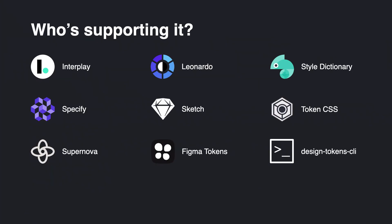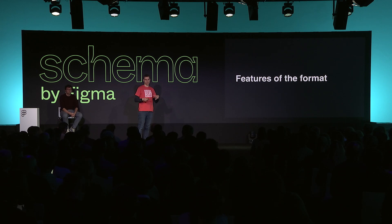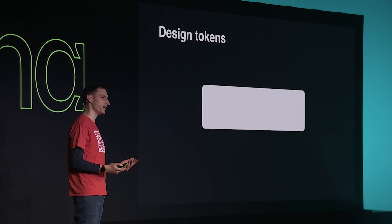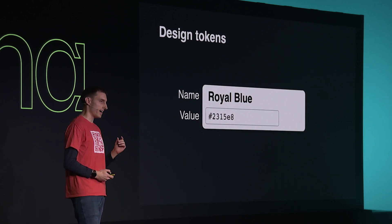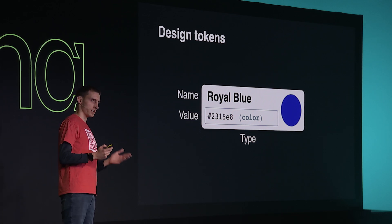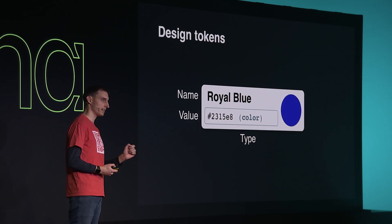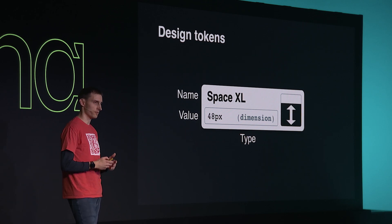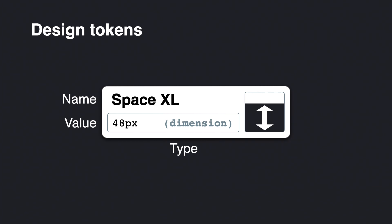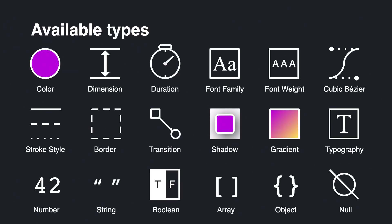The good news is that even if the standard is still a draft, we already have different tools and organizations that support it or plan to, including Figma. Now let's take a closer look at some of the features the file format affords. Obviously, you can represent Design Tokens inside these files. The bits of information stored for each token are their name, their value, and the type of the value. This is important because it enables every tool that supports the standard to reliably interpret those values. The format currently defines 18 different types — for example, colors, font families, and dimensions, which you can think of as sizes for spacing values, font sizes, border radiuses, and so on. We expect this list of types to potentially grow or evolve over time.